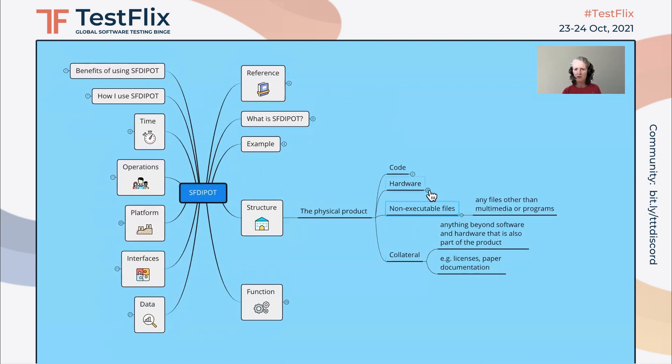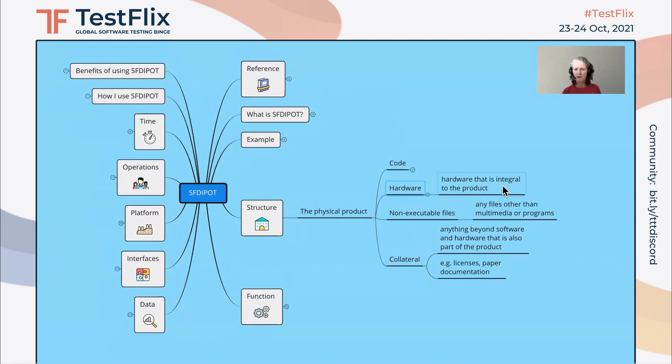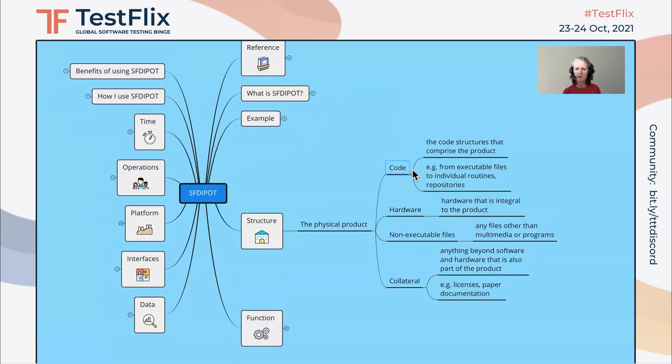If it is relevant, we'll take a look at it, and if it's not relevant, we'll ignore it. So for this case, we're going to ignore hardware, non-executable files, and collateral, because they're not as relevant. The most relevant part here is code.